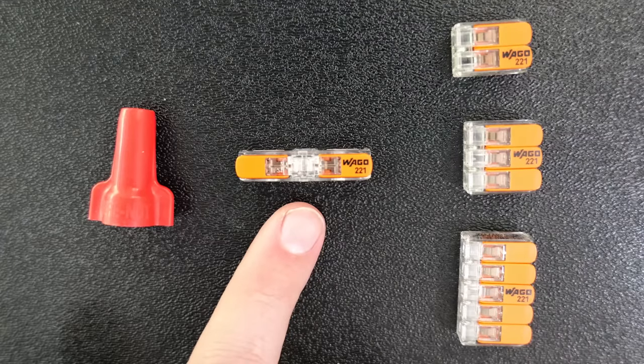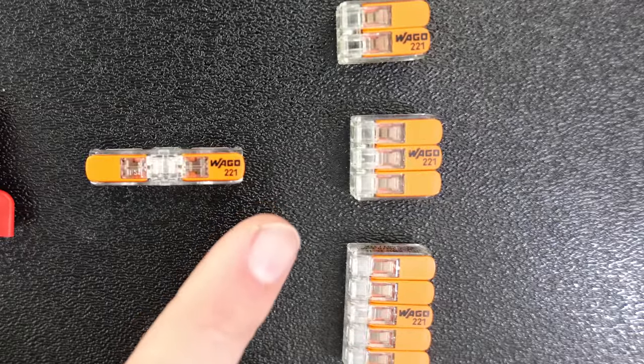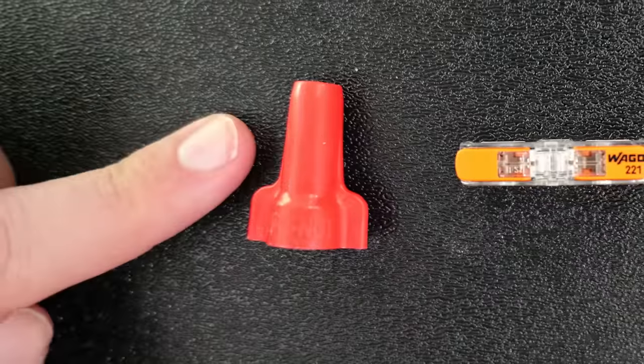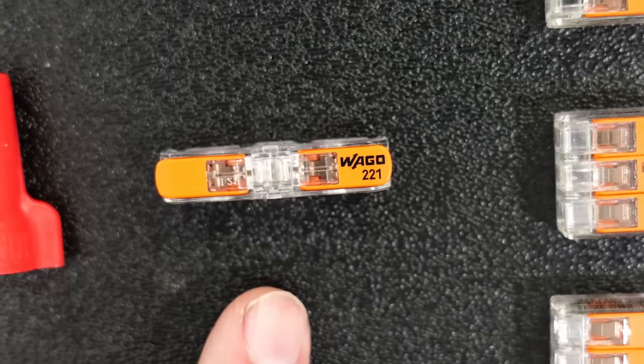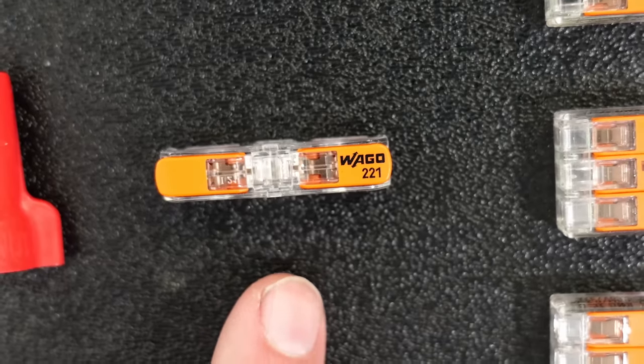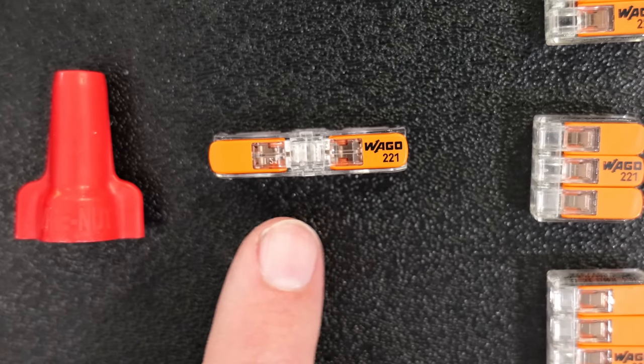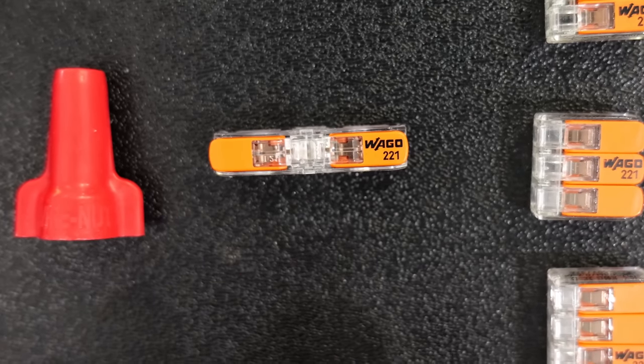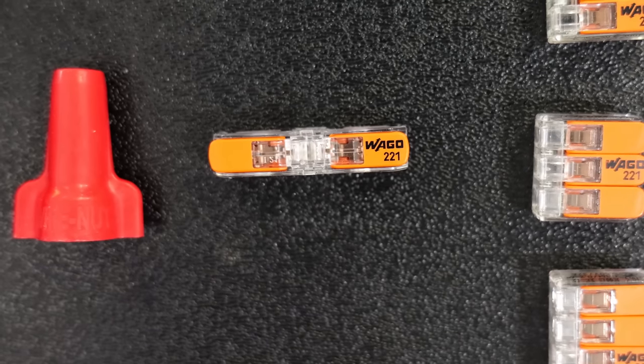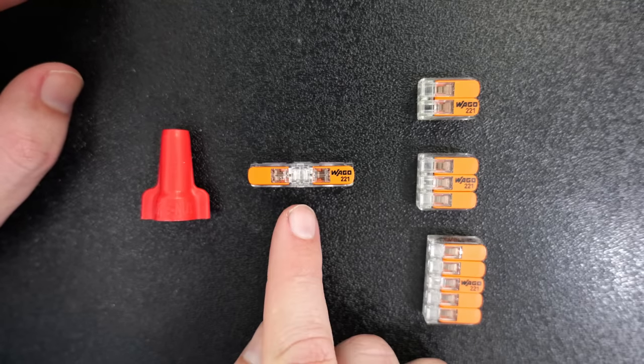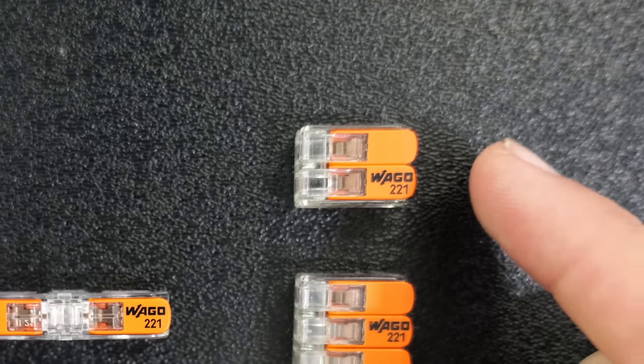Here I've got the WAGO 221 inline connector. Over here on the right, I've got the original WAGO 221, and then of course I've got what pretty much everybody knows is a wire nut. First, let's notice the size difference. As you can see, the inline connector is a little bit longer and obviously a lot narrower than any of the other devices. It does take up the exact same room when it comes to cubic inches as this two-wire connector over here.